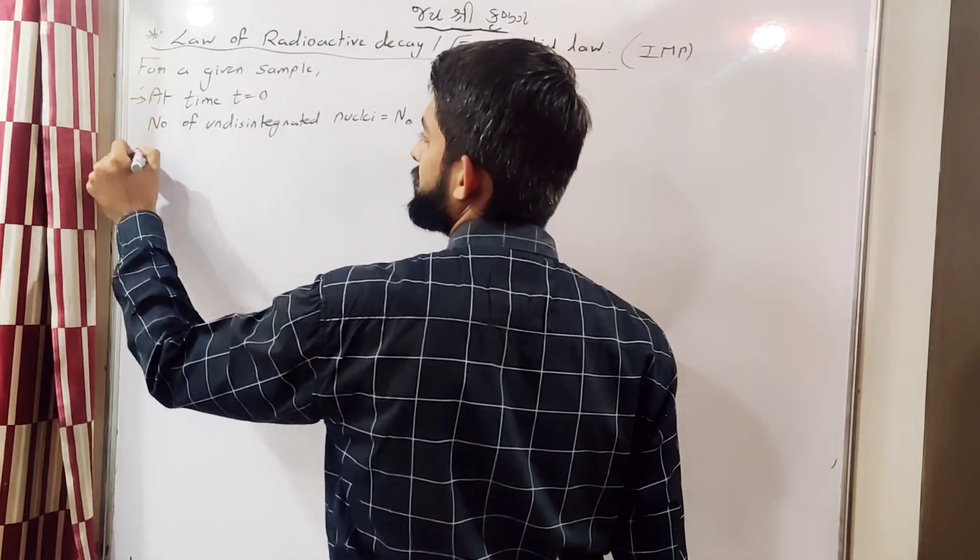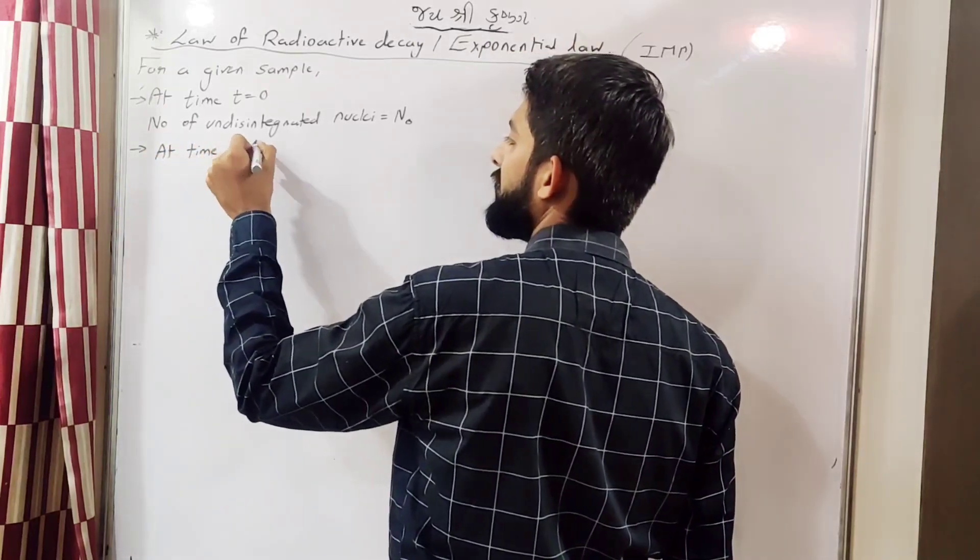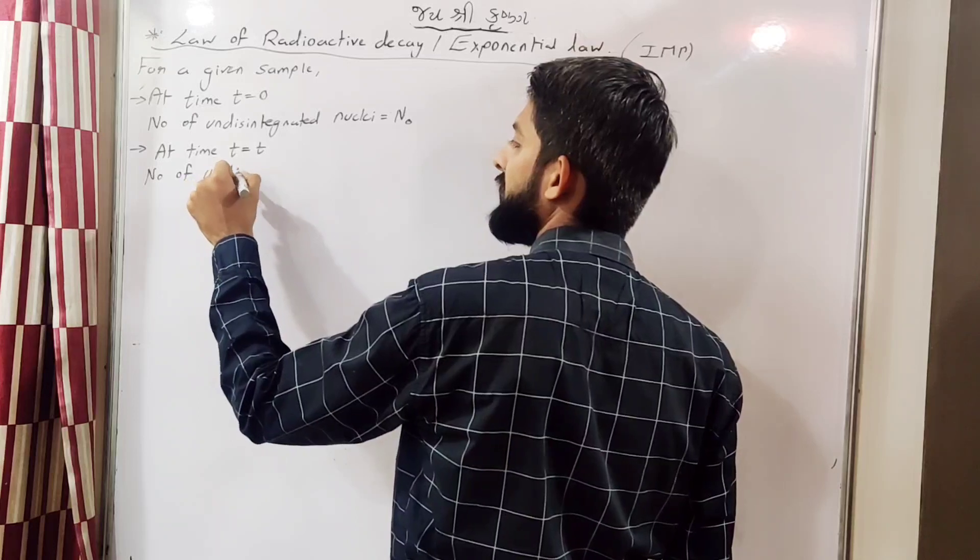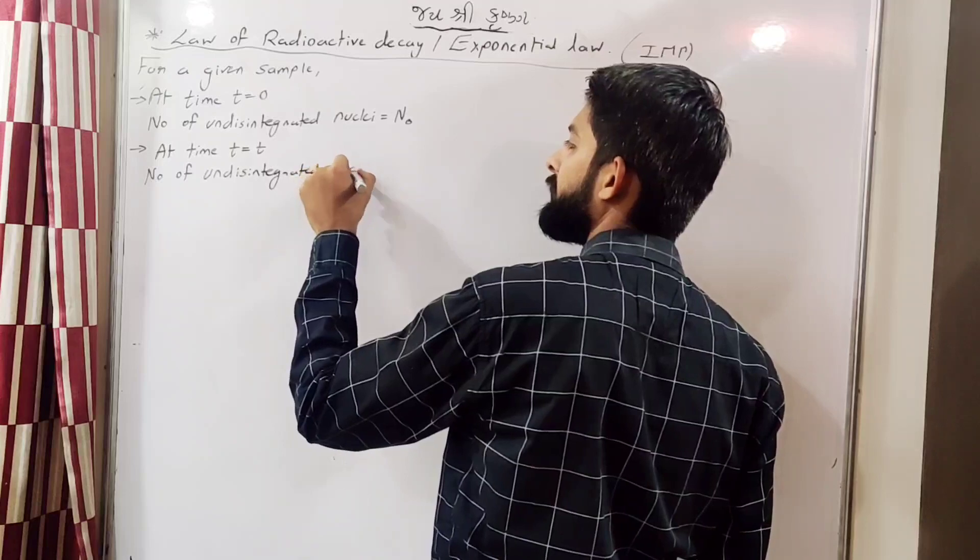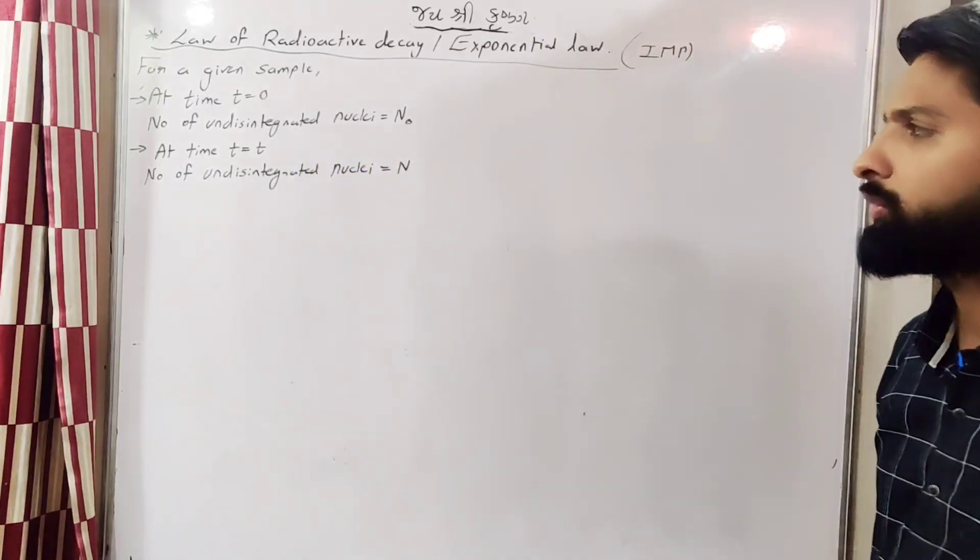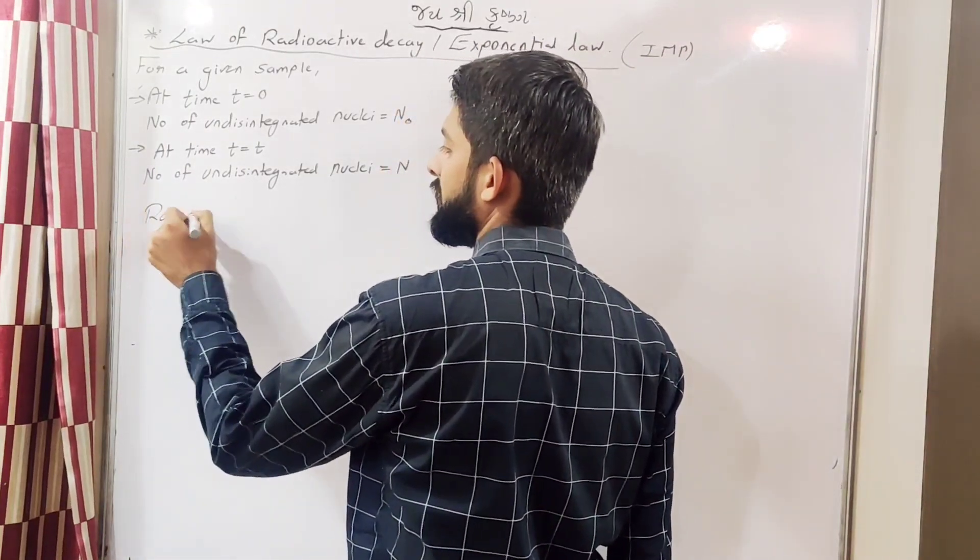Now at time t equals t, the number of undisintegrated nuclei will be n.